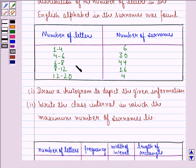Here we have a table where we have number of letters 1 to 4, 4 to 6, 6 to 8, 8 to 12 and 12 to 20. Number of surnames are 6, 30, 44, 16 and 4 respectively.